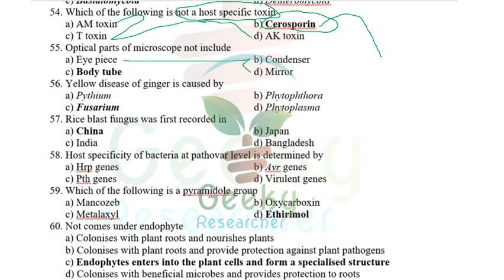Optical parts of a microscope include eyepiece, condenser, and mirror. Body tube is NOT part of the optical components. I initially thought it was the condenser, but the answer is body tube — it is not an optical part.